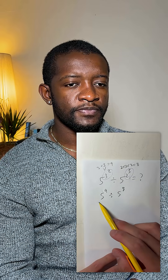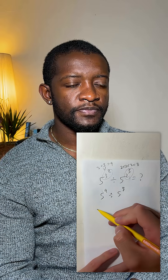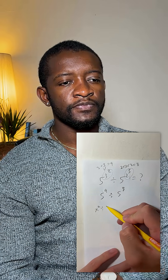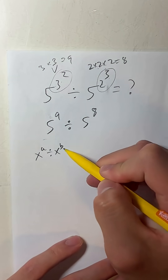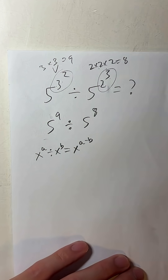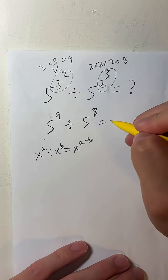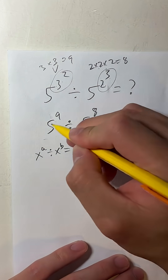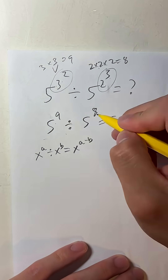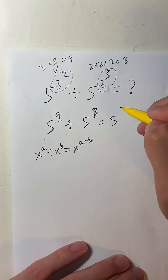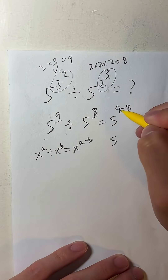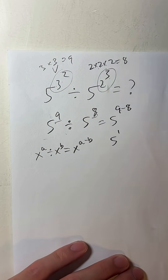Now how do we divide fractions with the same base? We have to remember this rule: x to the a divided by x to the b is equal to x to the a minus b. So in this case, this is actually just equal to 5 to the 9 minus 8 — subtract these two — and that's going to give us 5 to the 9 minus 1, which is 1.